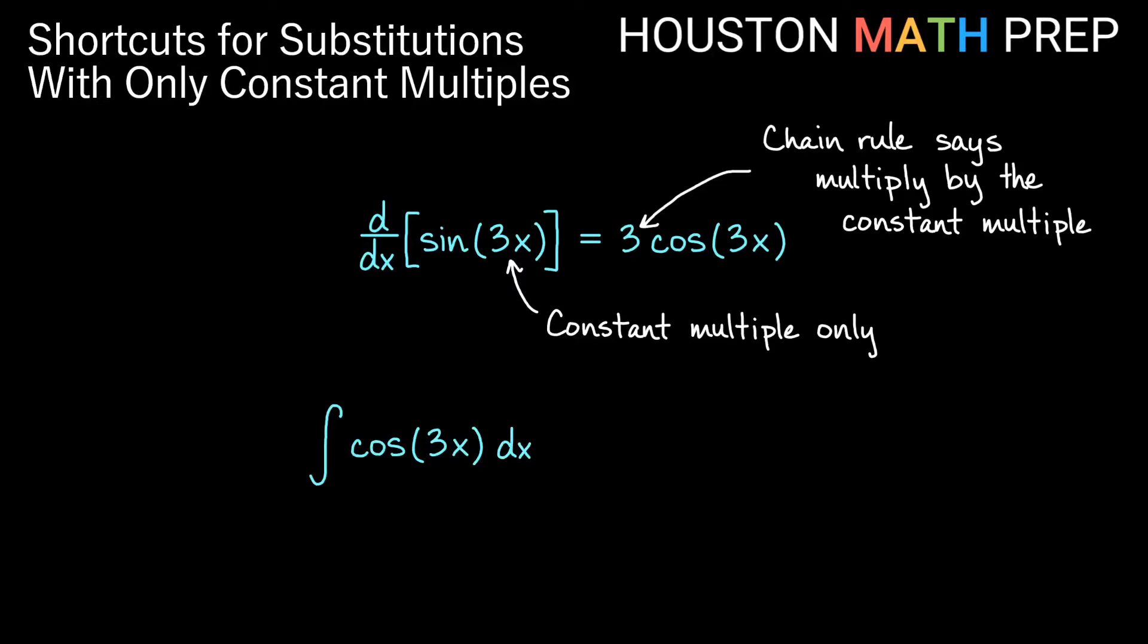So think about now if we had the antiderivative of cosine of 3x dx. So inside we have a 3x and we could certainly do u equals 3x as a u-substitution and get the answer for this.